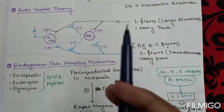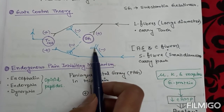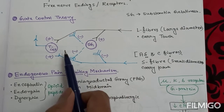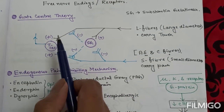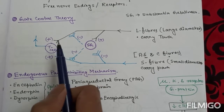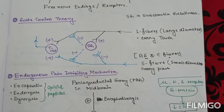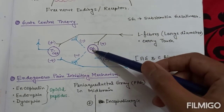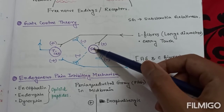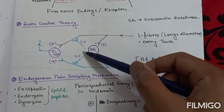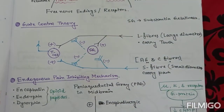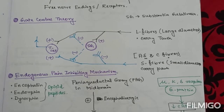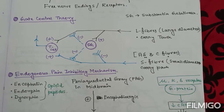Both act upon an inhibitory neuron of substantia gelatinosa called the SG neuron. Also, both of them stimulate the T cell, which is the pain afferent transmitted centrally from the dorsal horn. Activity in the large diameter afferents stimulates the SG neuron, which in turn inhibits the stimulation of the T cell by both L and S fibers. This explains inhibition of pain when large diameter afferents carrying touch sensation are stimulated.